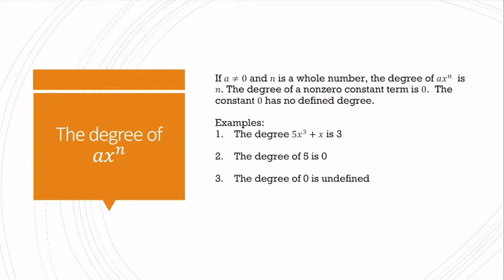So if a doesn't equal 0 and n is a whole number, the degree of ax to the n is n. The degree of all constant terms is 0. And the constant 0 has no defined degree because 0 to the 0 is undefined. So the polynomial 5x cubed plus x is a degree 3 polynomial. The degree of 5, which is a constant, is 0. And the degree of 0 would be undefined.